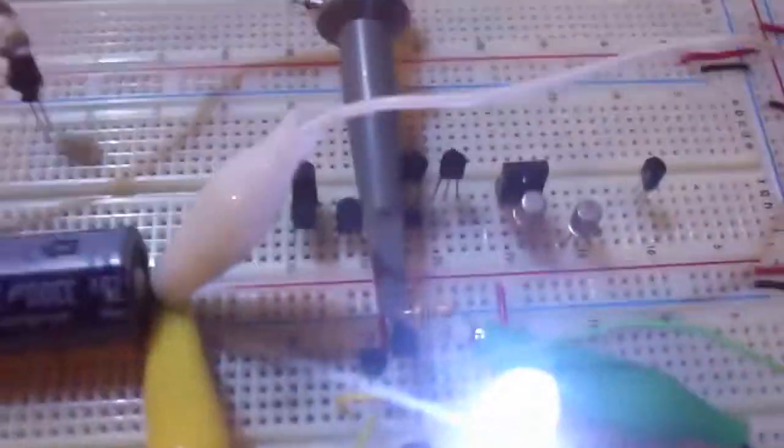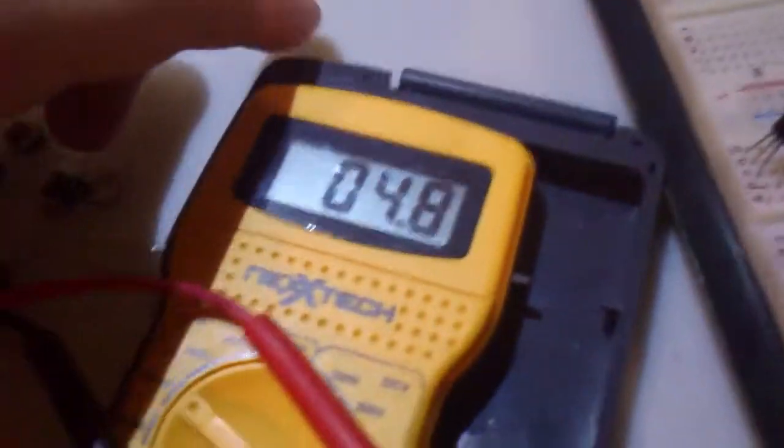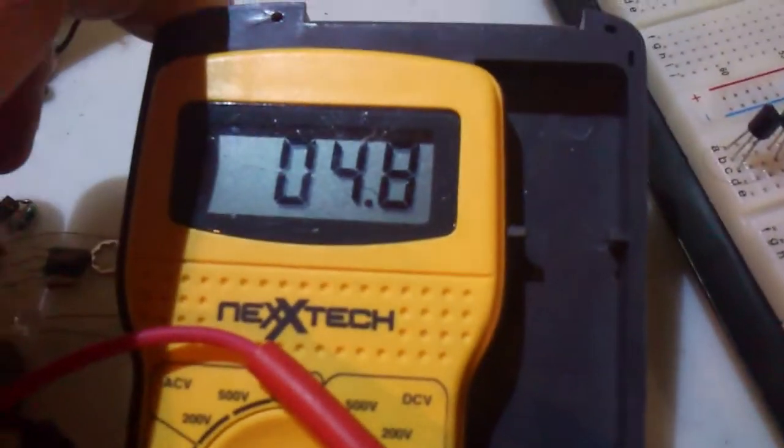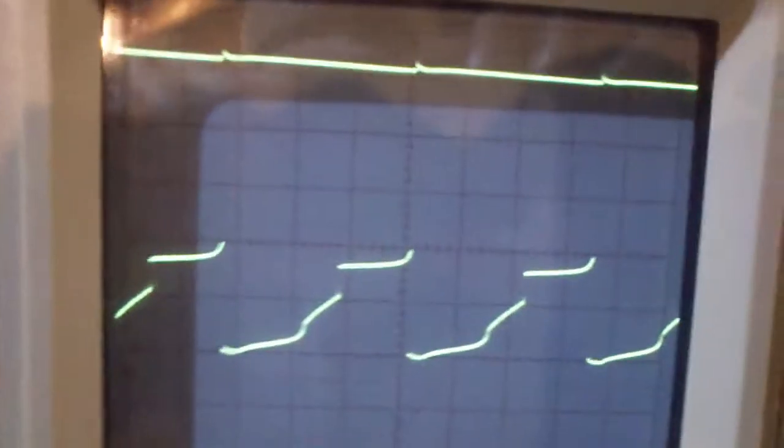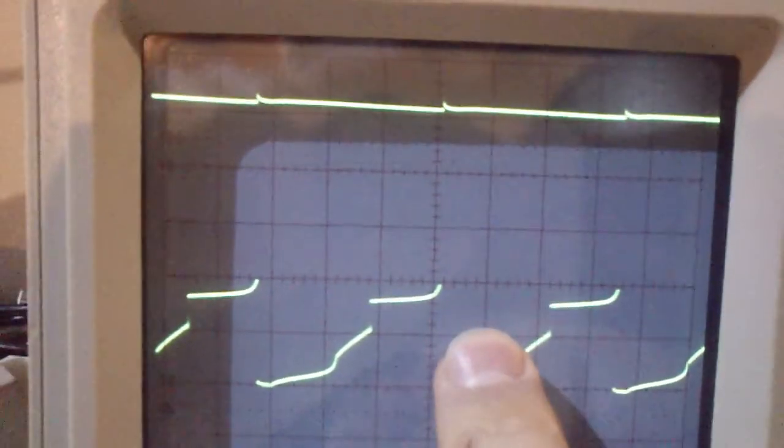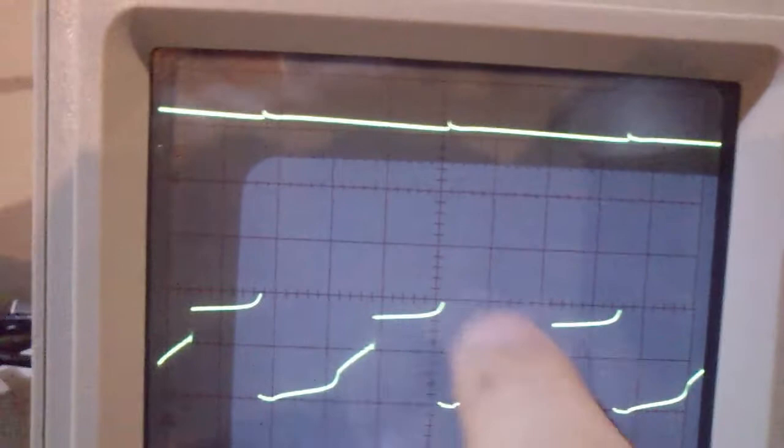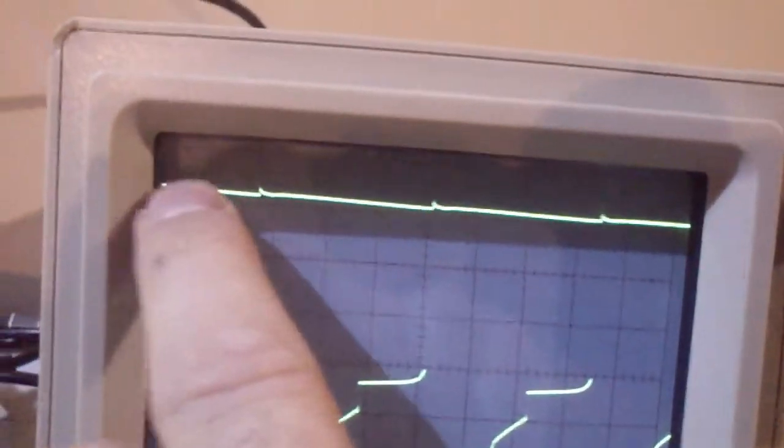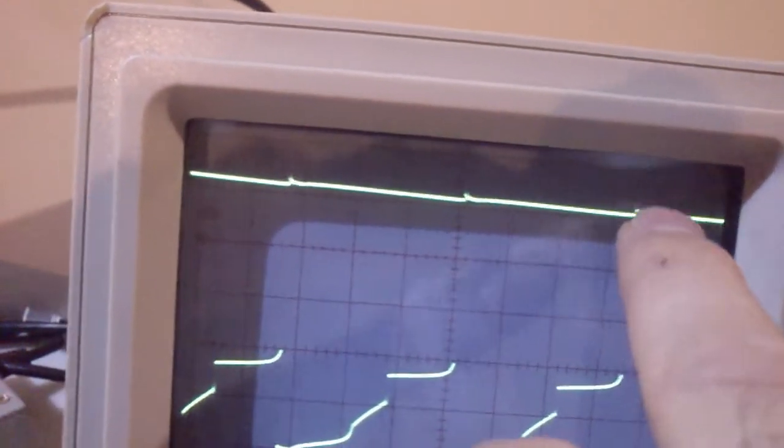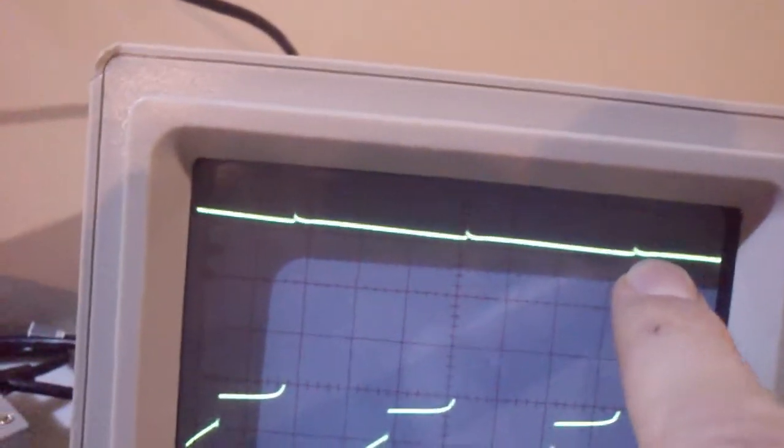And of course, this is the milliamp on the LED right now. This is the milliamp of my input. Good scope shot, of course. Right there, that's the base of the primary transistor. And this here is actually the base of the second transistor.